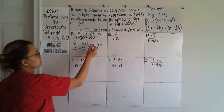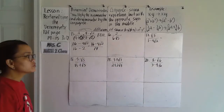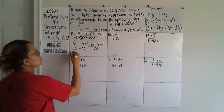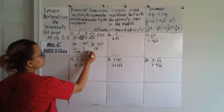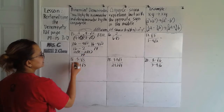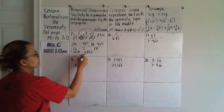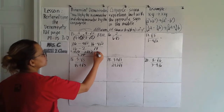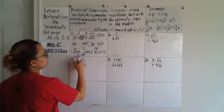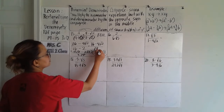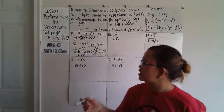We can simplify further because sixteen and four share a common factor of two. Dividing: eight minus two square root of two over fourteen. Then two and fourteen simplify — two becomes one, fourteen becomes seven — so the final answer is eight minus two square root of two over seven.